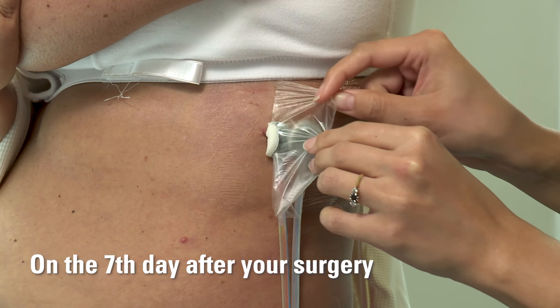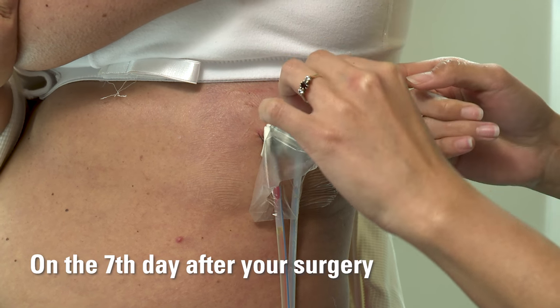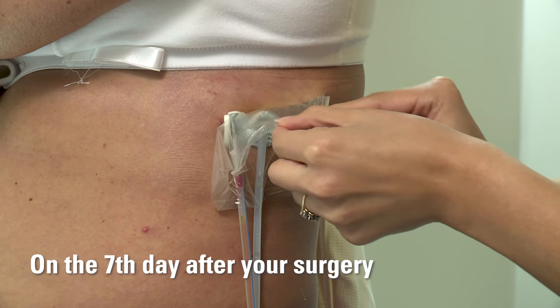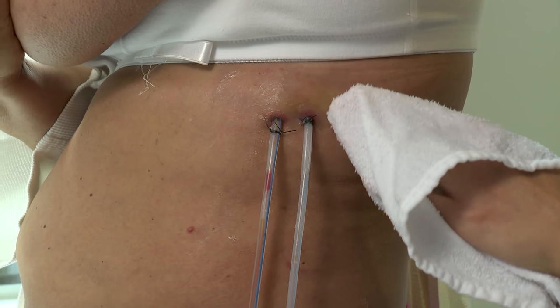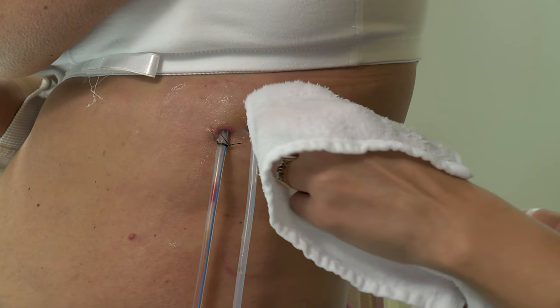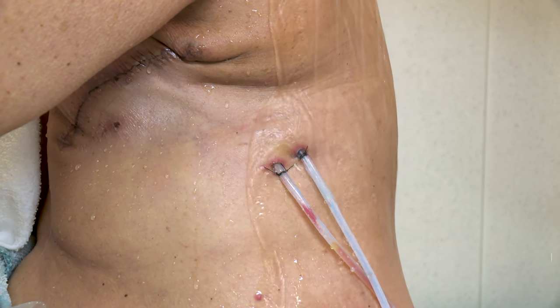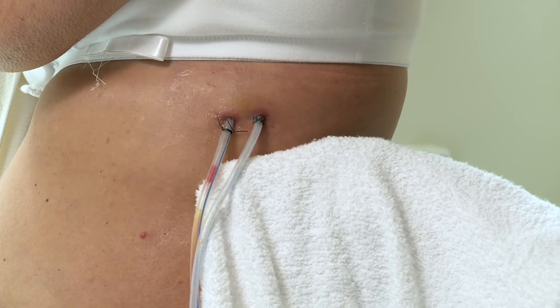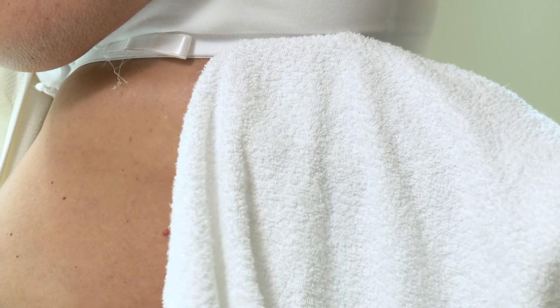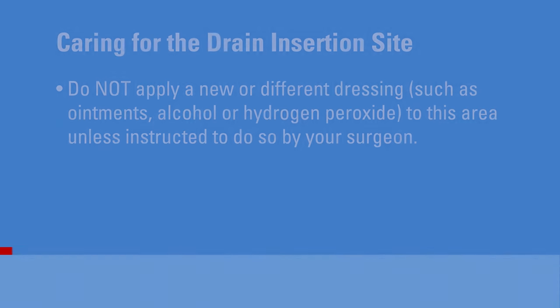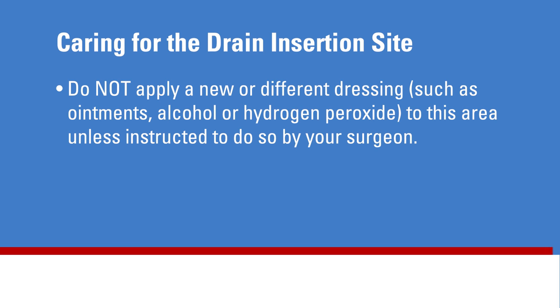On the seventh day after your surgery, gently remove the Tegaderm and bio patch and throw them away. Once removed, gently wash the skin around the drain insertion site. If showering, allow soapy water to run over the area like a waterfall, rinse well, pat the area dry with a clean towel, and allow to air dry for a few minutes. Do not apply a new or different dressing — such as ointments, alcohol, or hydrogen peroxide — to this area unless you are instructed to do so by your surgeon.